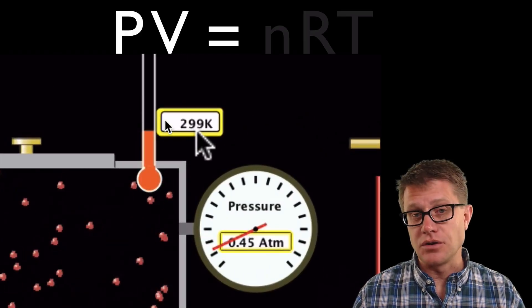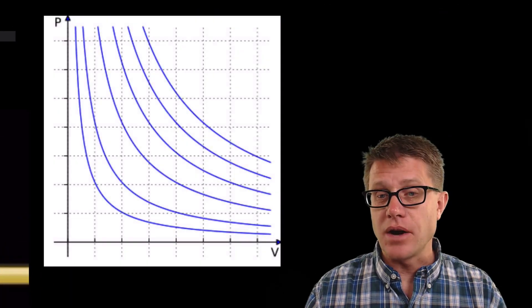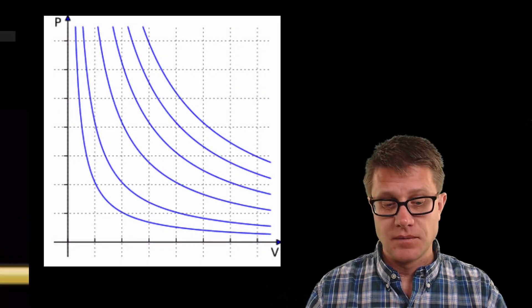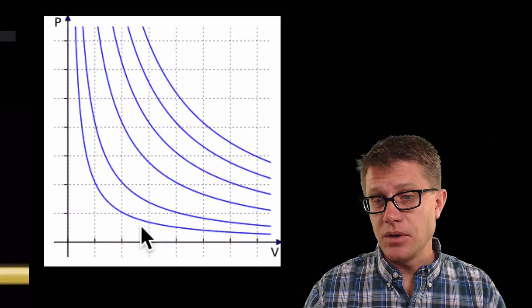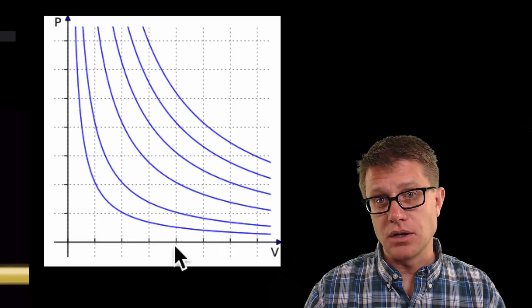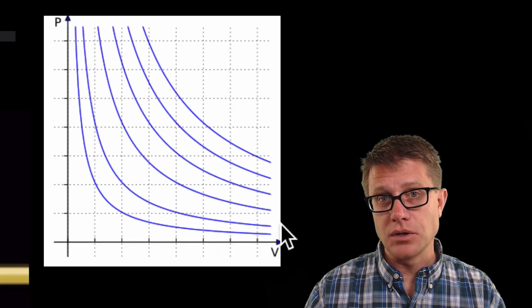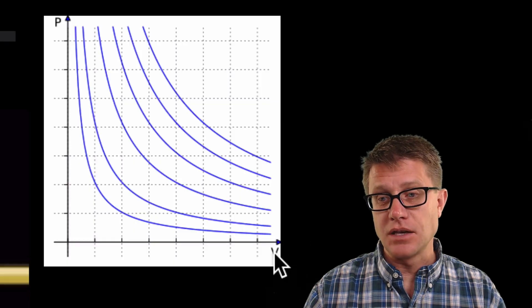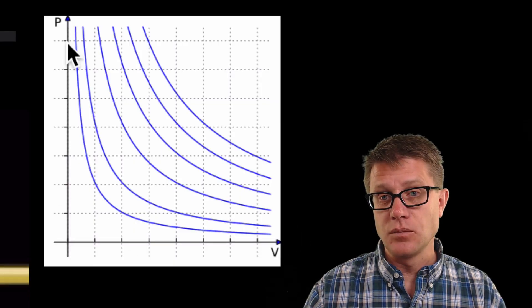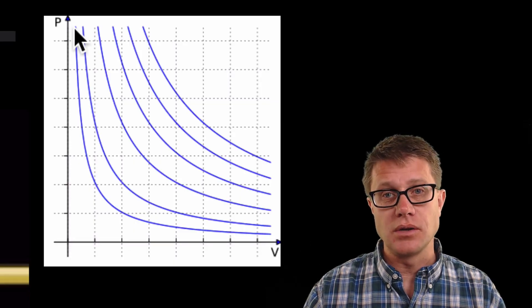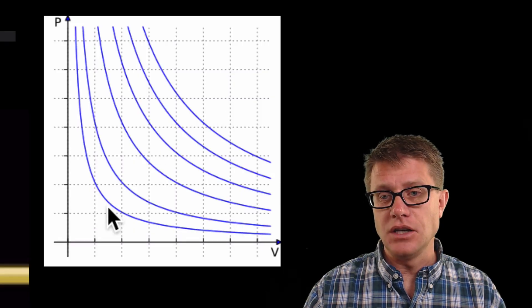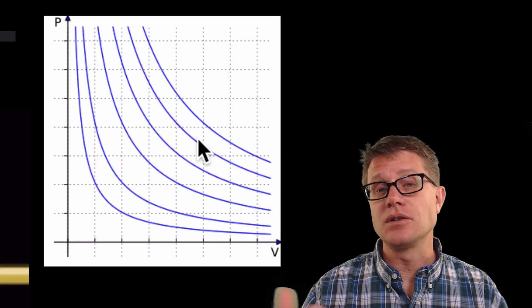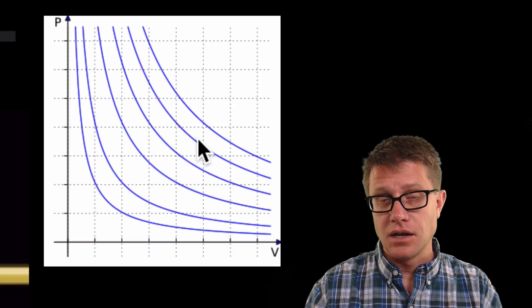If we were to, keeping the temperature exactly the same, if we were to graph it, it would look like this. If we increase the volume, so I am going in this direction, what happened to our pressure? Our pressure decreases. What happens as we decrease the volume? What happens to our pressure? Our pressure is going to increase. Now why do we have a number of different lines here? Each of these are going to represent different temperatures of the gas. As long as we keep those temperatures constant.